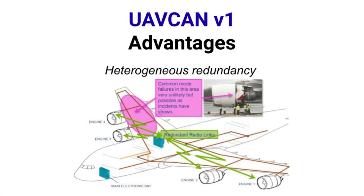Heterogeneous redundancy: the UAVCAN protocol can work over different transport and physical layers simultaneously. This enables dissimilar redundancy, where the network can increase its robustness by leveraging different failure modes of the underlying transports. This concept is particularly relevant for hybrid wired-plus-wireless configurations, as demonstrated by the WAIC project.